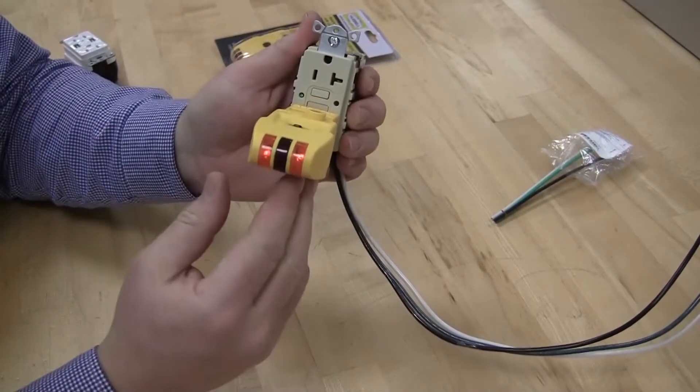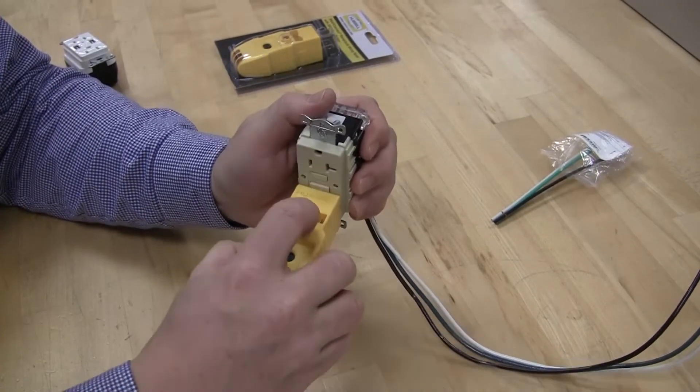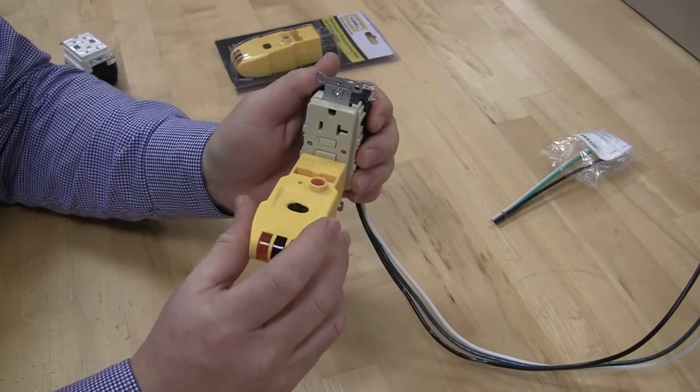It shows again that it's properly wired with the outboard lights. And then with the press of this red button, I can test the GFCI functionality.